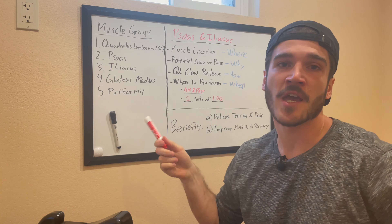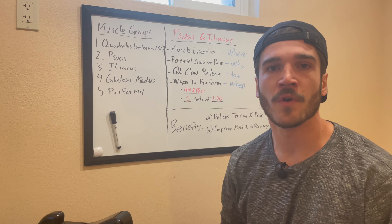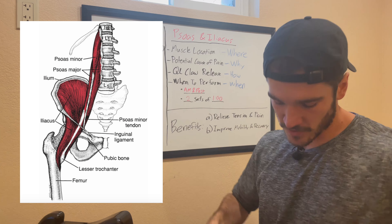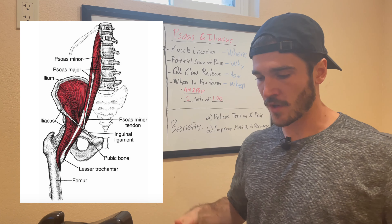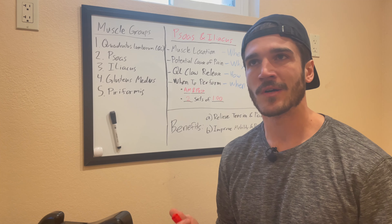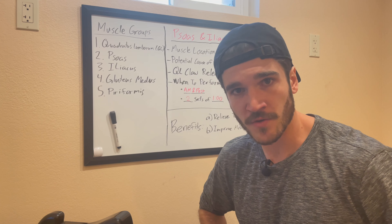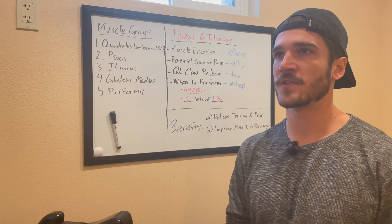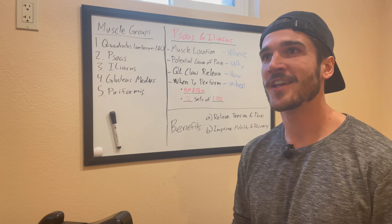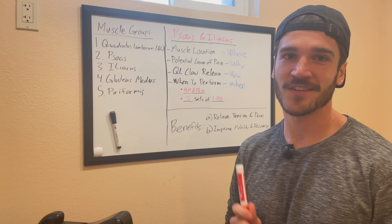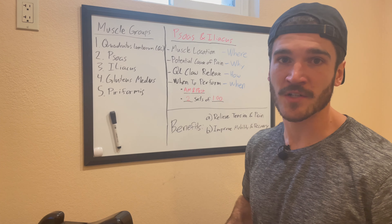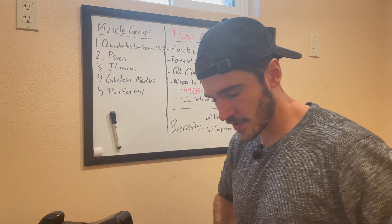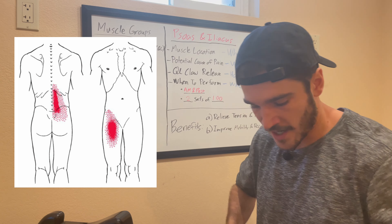Next we have the psoas and the iliacus. I'm going to talk about these together because they're often referred to as one — the iliopsoas complex. These are the two hip flexors on the front of the body. If you have a lot of back pain from sitting and being too sedentary, those are the muscles that tighten up all day from sitting in a chair. Working a desk job more than eight hours is very unnatural, and our bodies are not built to handle that strain on those hip flexor muscles. They're on the front of the body but will refer a lot of pain to the lower back and upper hip.